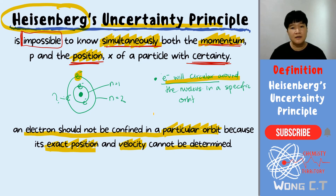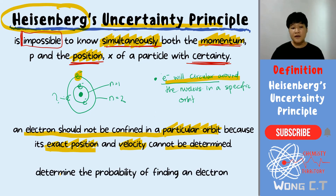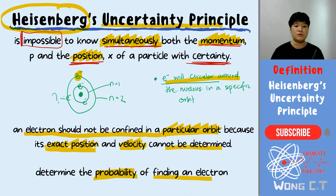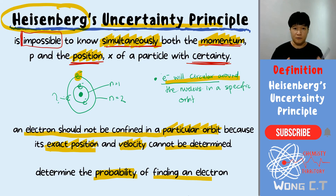Therefore, we can only determine the probability of finding an electron. We can roughly know where the electron is, but we won't know its exact position when the electron is actually keep moving around the nucleus.